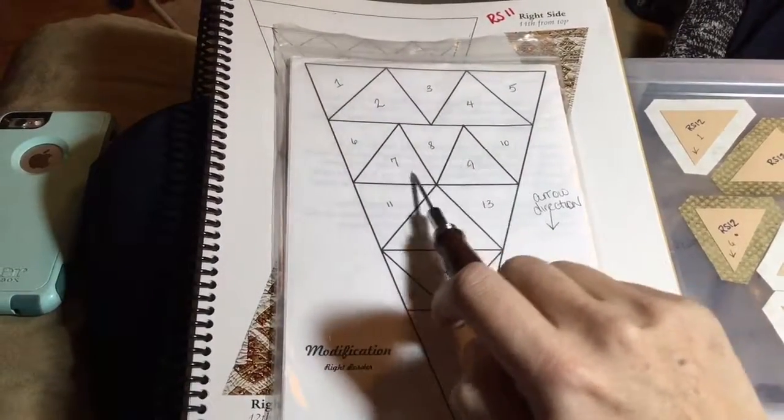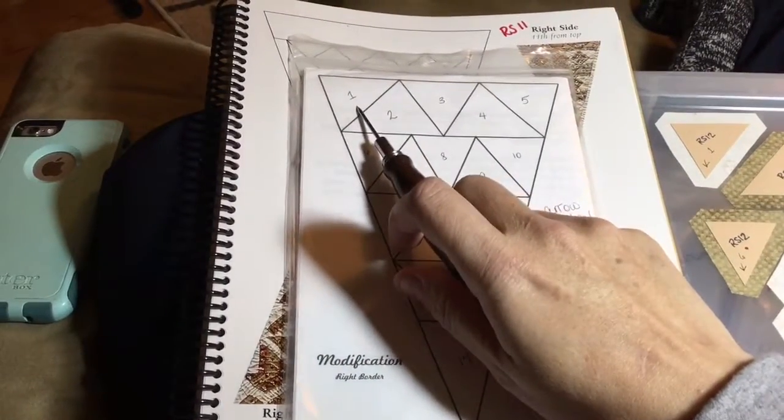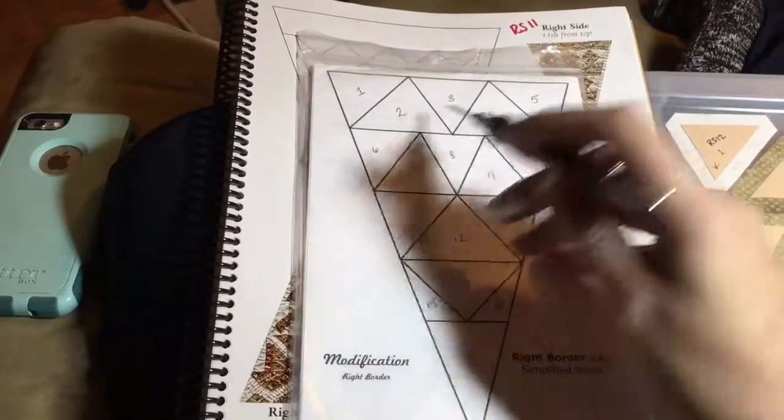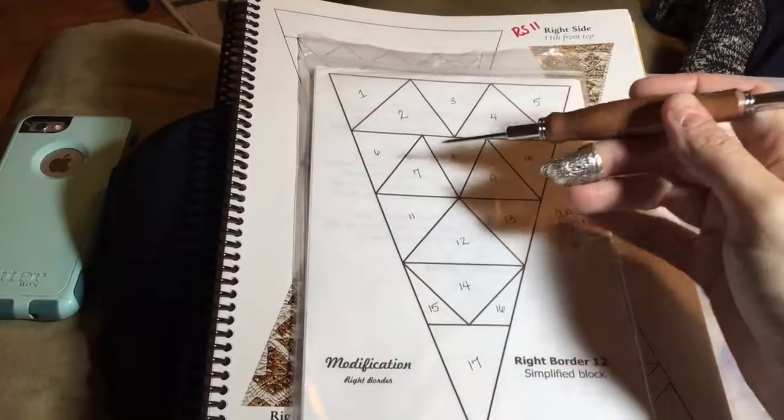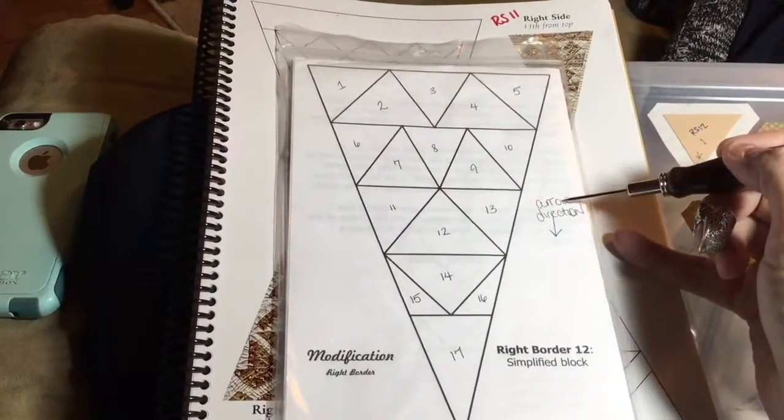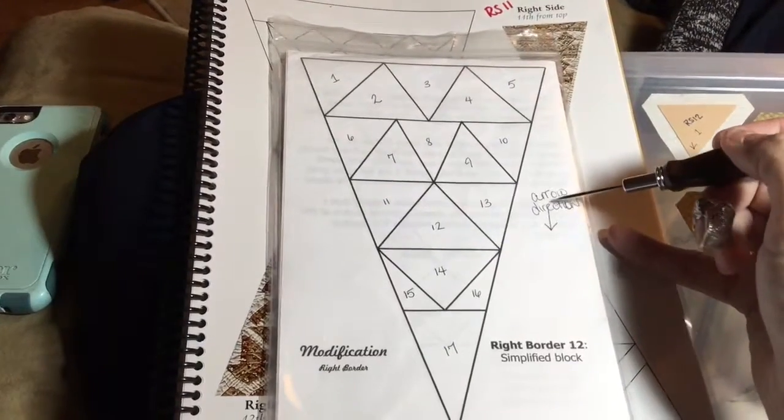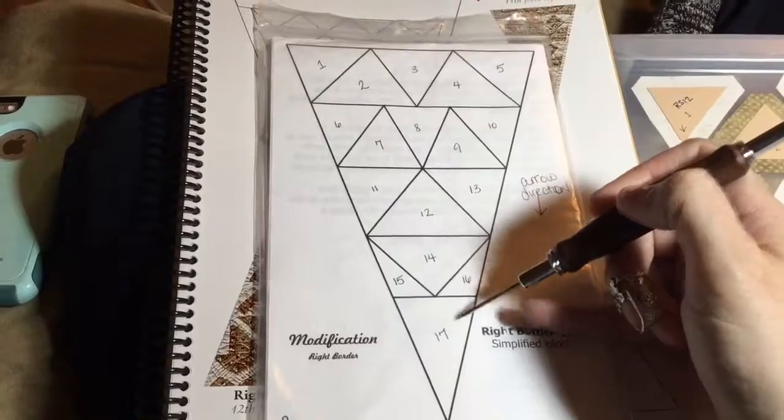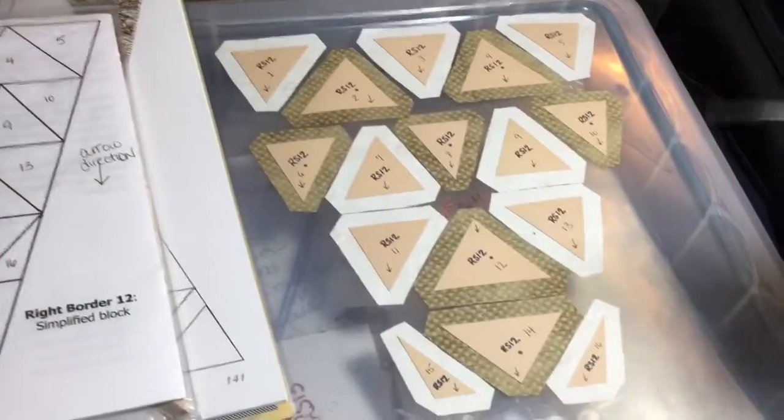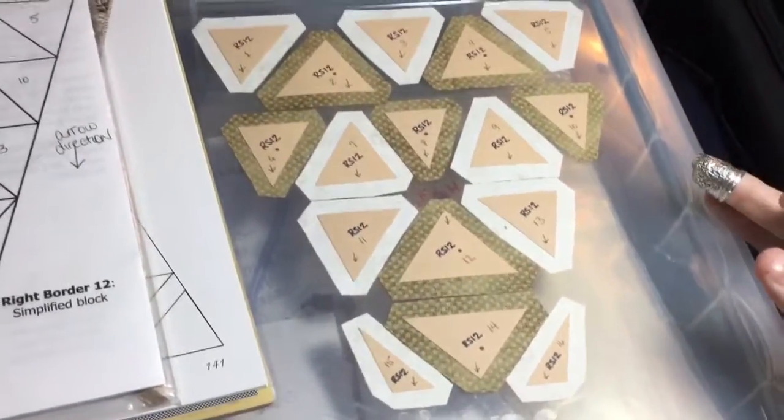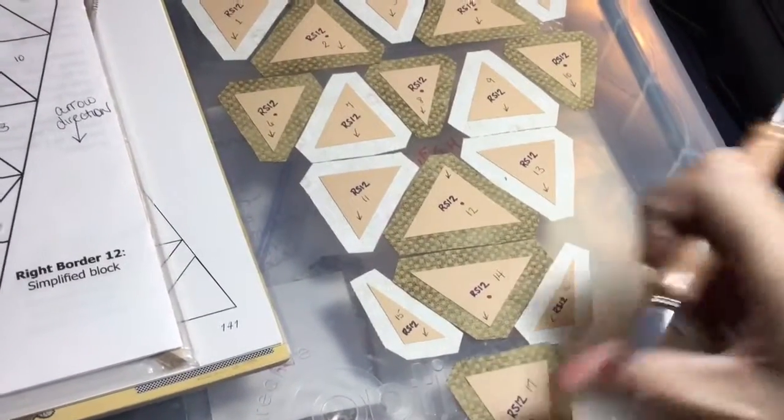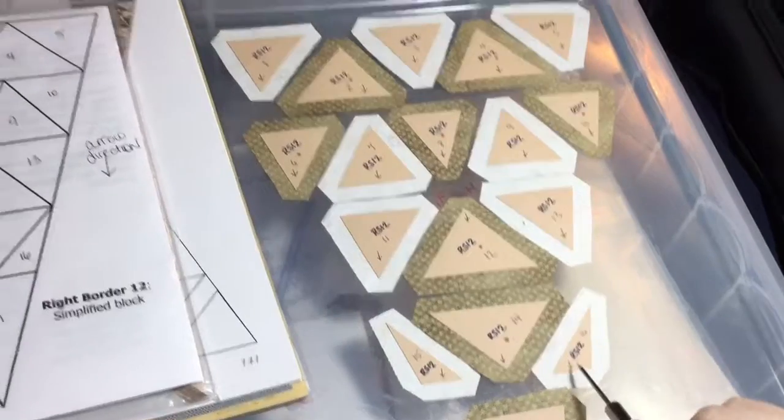It's really easy to get these mixed up, so it's not only important to number them but it's also important to make sure that they're all pointing in the right direction. What I've done is I put an arrow direction on which way they're supposed to be oriented when I set them up. Each one of these has an arrow, and this is not for fabric direction—this is for triangle direction. All of these have their arrows pointing down.